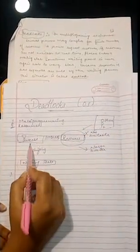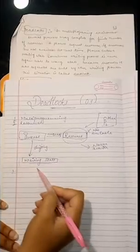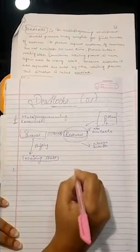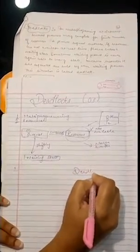Then what will happen? This process will never get this resource and stay in waiting state. This is a situation where deadlock comes into the picture. This is exactly the state in which deadlock is defined. This is the situation.